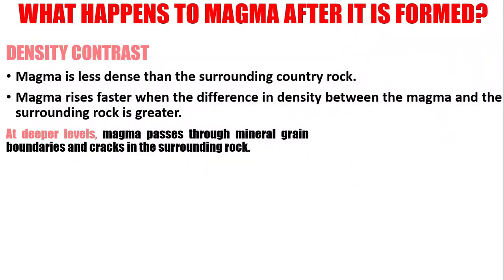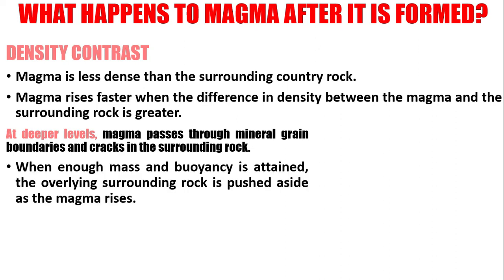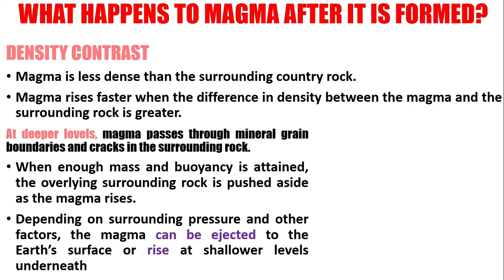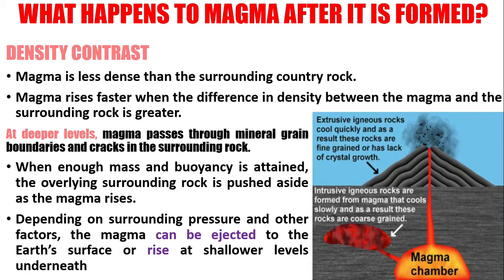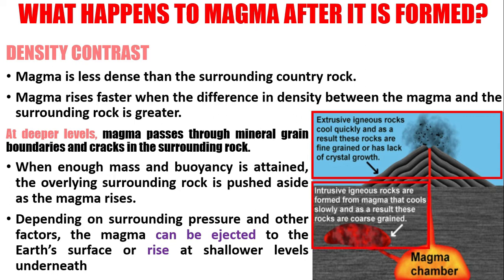At deeper levels, magma passes through the grains and cracks of the surrounding rock. So when the magma has enough mass and buoyancy — buoyancy is the power to float — it pushes the surrounding rock to the side as it rises. Depending on the surrounding pressure and other factors, magma can be ejected or rise at shallower levels underneath. This figure shows two processes as magma rises: first, ejection — they are ejected out to the surface through volcanoes; and second, solidification within shallower levels, where they form intrusive igneous rocks.